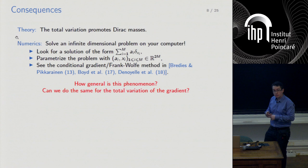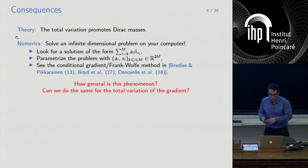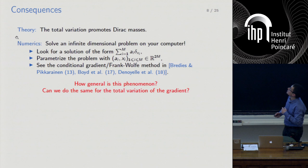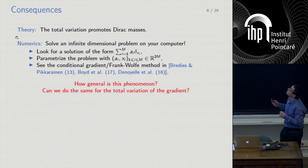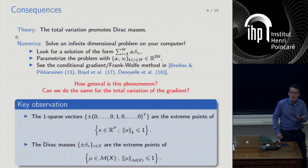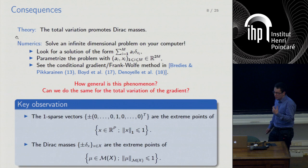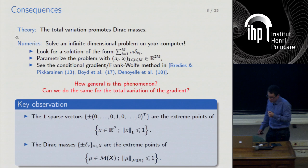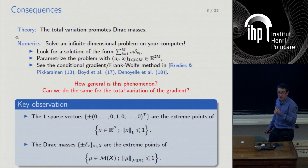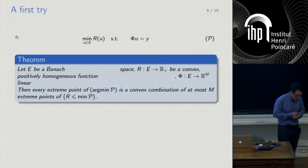How general is this phenomenon? Can we extend these results and numerical methods to more general regularizers — in particular to the total variation of the gradient? The key observation is that in the case of the L1 norm, the atoms are the extreme points of the unit ball of the L1 norm; and in the case of total variation for measures, the Dirac masses are the extreme points of that unit ball.